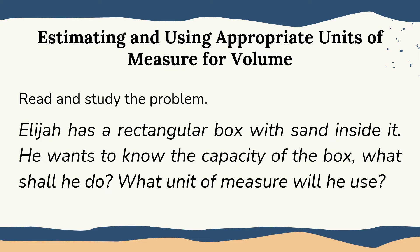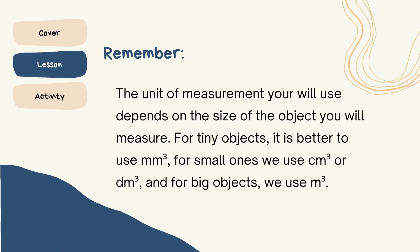In estimating and using appropriate units of measure for volume, depende sa given na bagay na pinaglalagyan o kukunan natin ng volume. The unit of measurement to use depends on the size of the object you will measure. So for tiny objects, it is better to use cubic millimeter. For small ones, cubic centimeter. Then kapag medyo kasing laki na ng ruler, so cubic decimeter. Pero kapag malaking gamit na — example yung pool — hindi na kaya ng kamay natin, so we use the cubic meter.